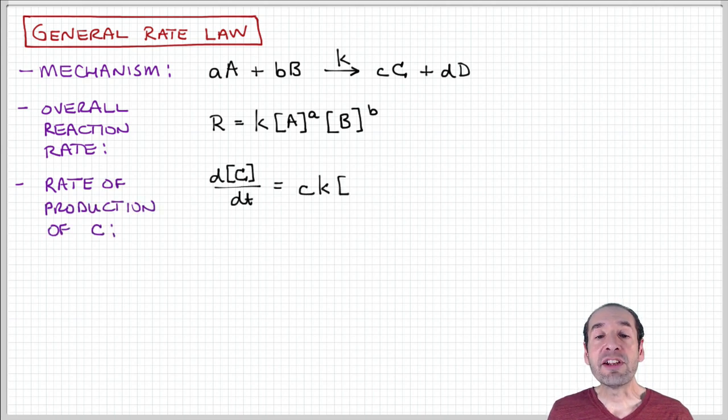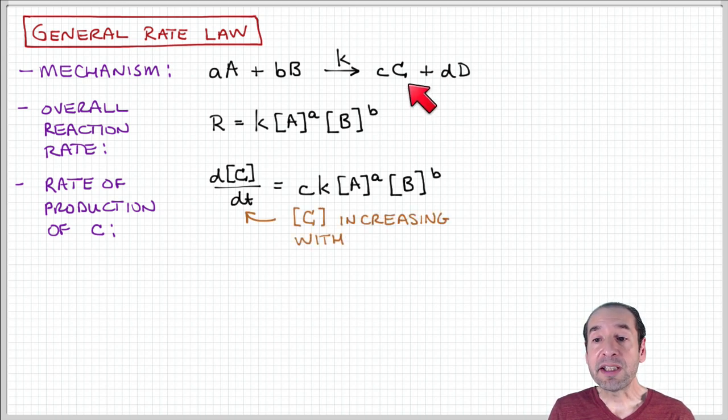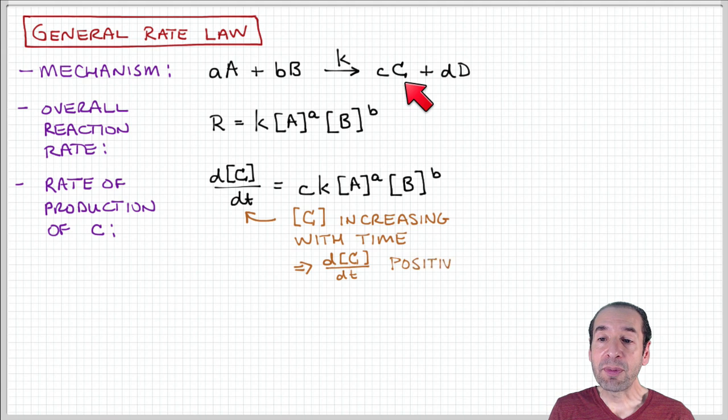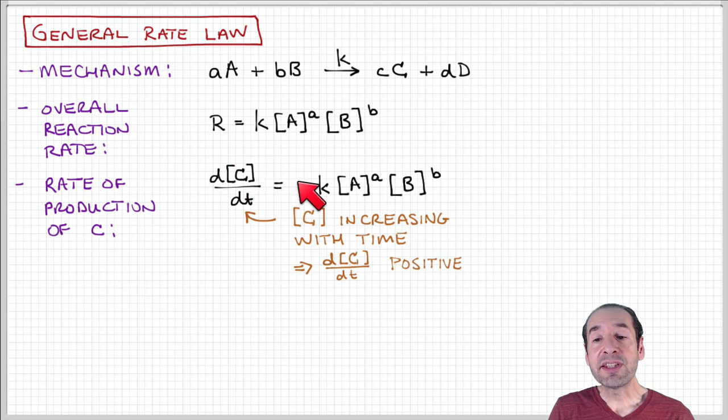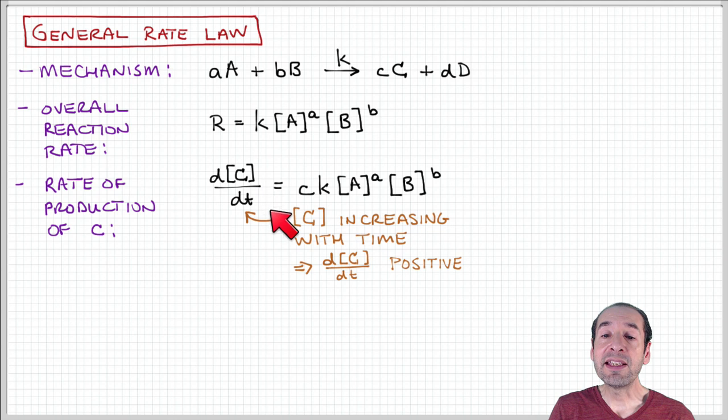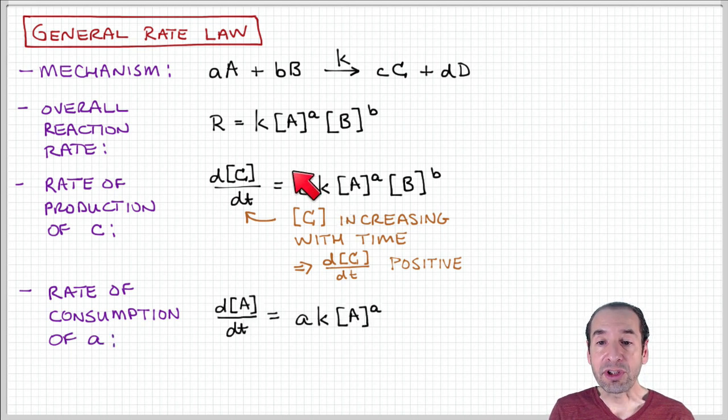Then we can talk about the rate of production of a particular species involved in this reaction. For example, for product C, the rate of production of C is equal to the rate of change of the concentration of C with respect to time. This is equal to the rate of reaction times the stoichiometric coefficient associated with species C. Notice that because C is a product, its concentration is increasing with time, so we expect this rate of production to be a positive quantity.